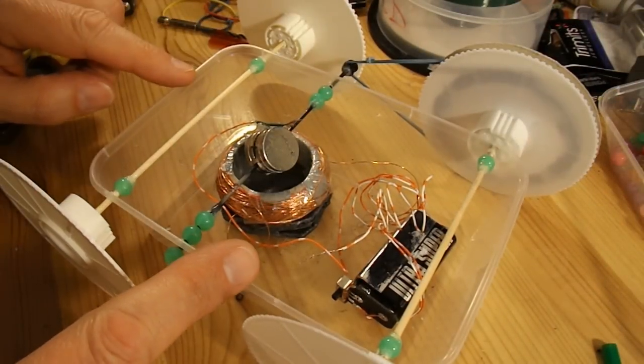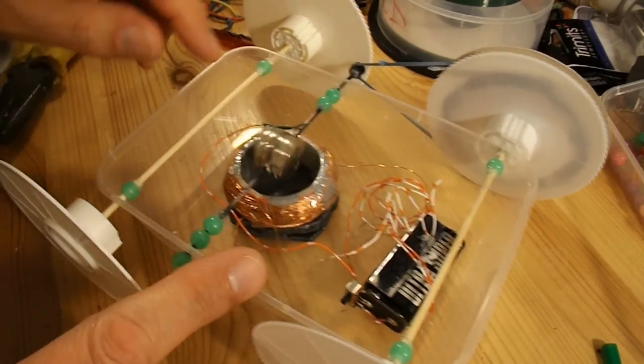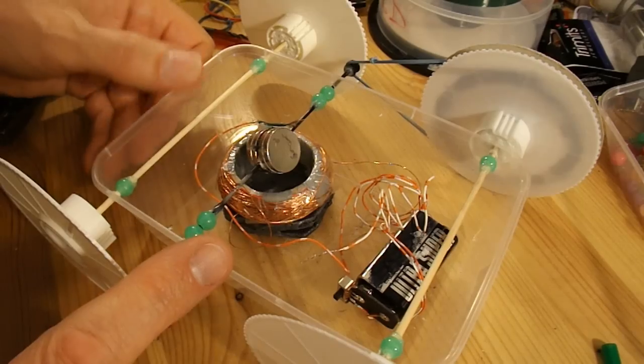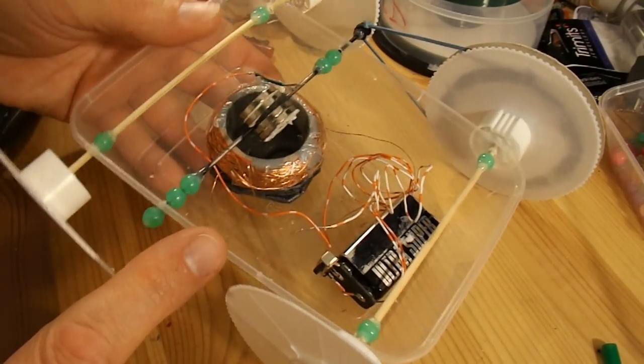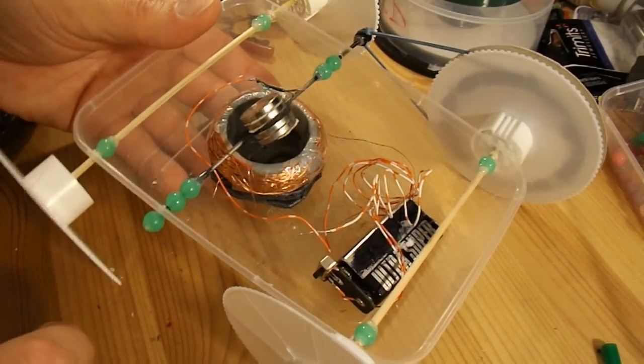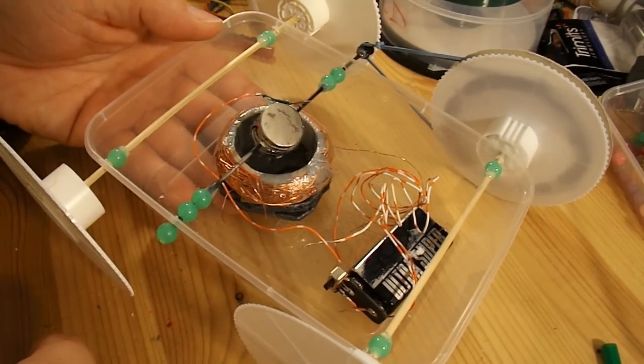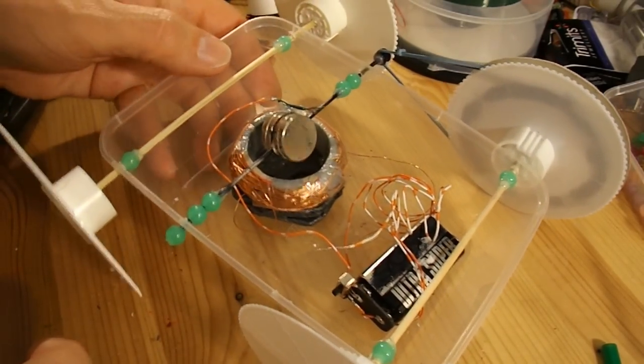I've made a bit of a mistake using this storage container as the chassis. It's very flexible, so every time I pick it up, everything bends out of trim. So we're just going to have to go and see if it'll work on a flat surface.